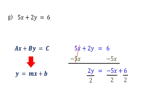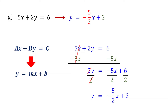Then divide both sides by 2 to isolate y. Remember to divide every term. These cancel out, leaving y by itself. 6 divided by 2 is 3. Now our equation is in slope-intercept form, so the slope is -5/2. b is 3, so the y-intercept is (0, 3).